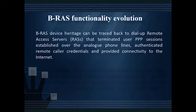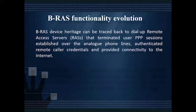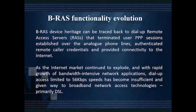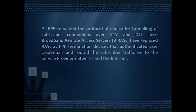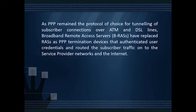BRAS functionality evolution: BRAS device heritage can be traced back to dial-up remote access servers that terminated user PPP sessions established over analog phone lines, authenticated remote caller credentials, and provided connectivity to the internet. As the internet market continued to explode and bandwidth-intensive applications grew rapidly, dial-up access limited to 56 kbps became insufficient, giving way to broadband access technologies, primarily DSL. As PPP remained the protocol of choice for tunneling subscriber connections over ATM and DSL lines, broadband remote access servers replaced RAS as PPP termination devices that authenticated user credentials and routed subscriber traffic onto service provider networks and the internet.